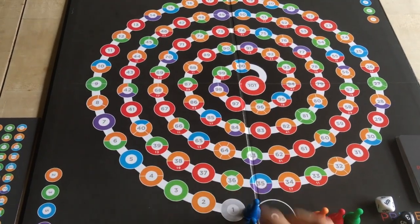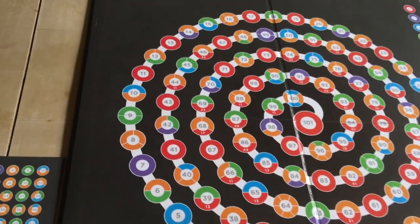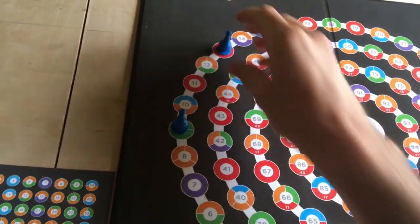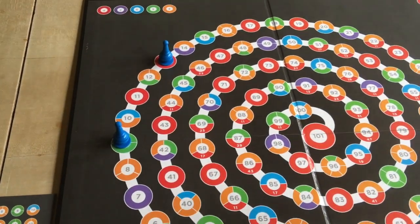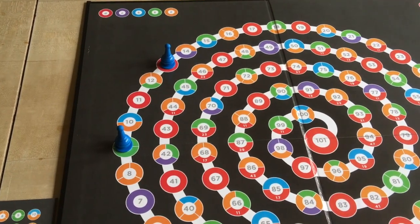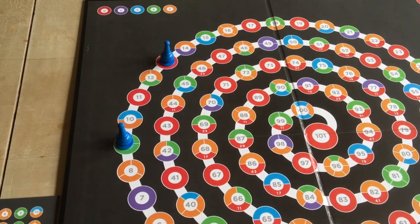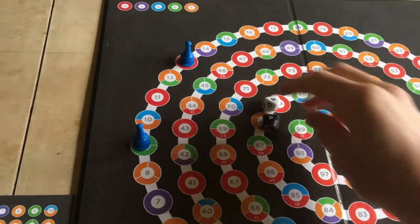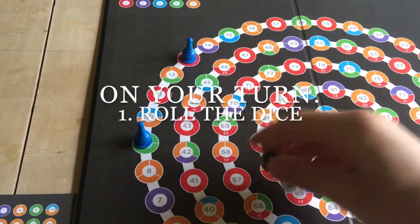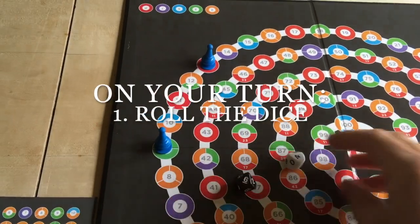Let's see what a turn looks like. It's easier to imagine that the game has already started. Maybe my two pawns are at 9 and 13. On your turn, you start by rolling the dice. Let's say I got a 6 and a 4.